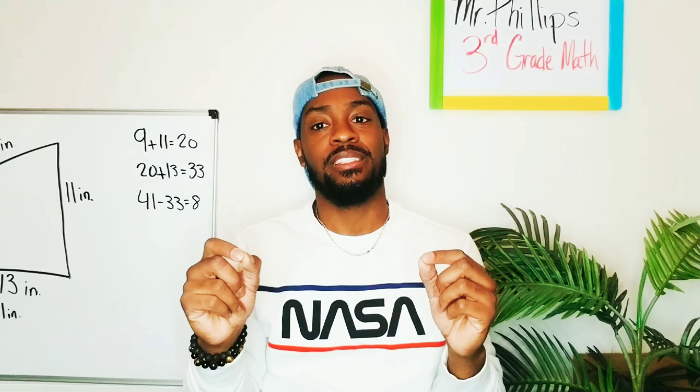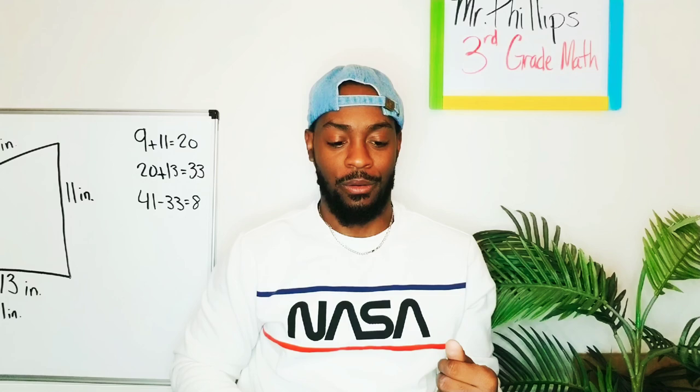So again, guys, to find the total perimeter, add up all the sides. But if a side is missing, add up the sides you have, take them away from the total perimeter, and that'll give you your answer.